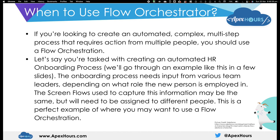Let's say you're tasked with creating an automated HR onboarding process, and that onboarding process needs input from various different team leaders depending on the role the new person is employed in. In this example, there are three key areas of the business: sales, service, and training. It's a training organization with students — you're either selling the courses, helping students with admin-related cases, or training them directly.